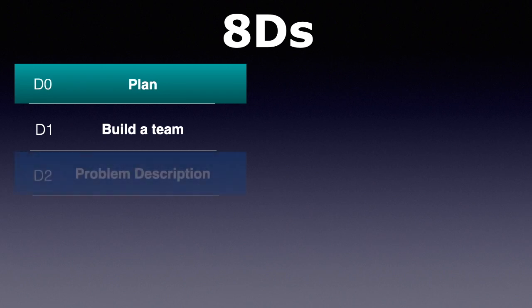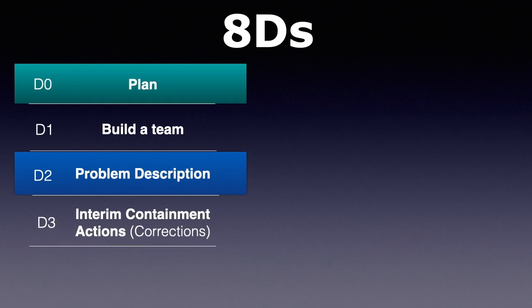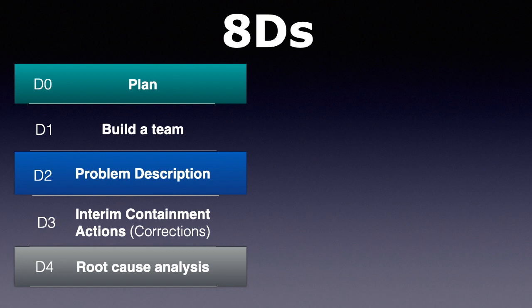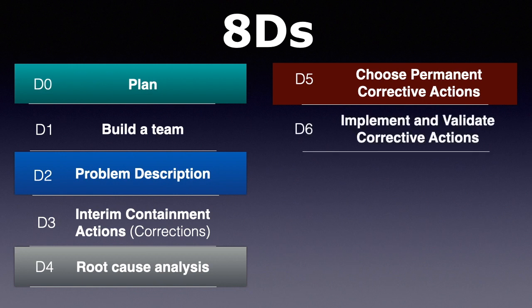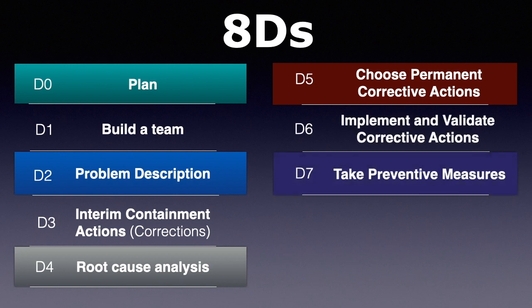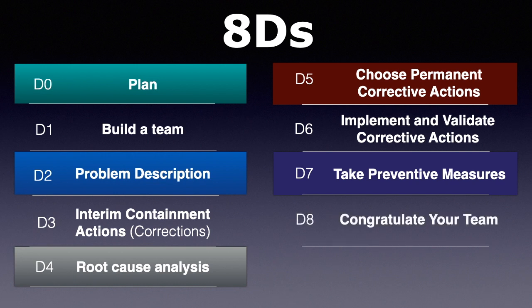D2 problem description, D3 ICA (interim containment action), D4 root cause analysis, D5 planning PCA (permanent corrective action), D6 implementing and validating PCAs, D7 taking preventive measures, D8 congratulating the team. D2 and D4 are important steps in this methodology and need more attention.